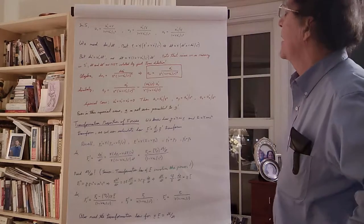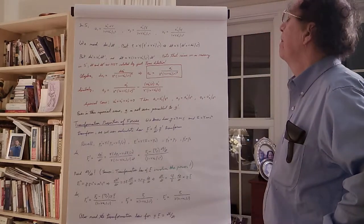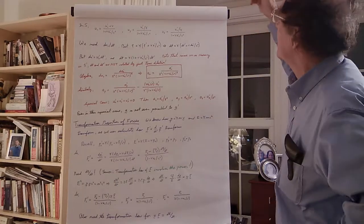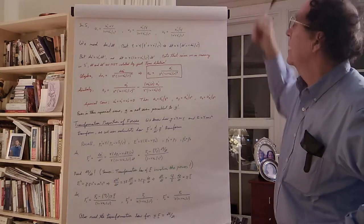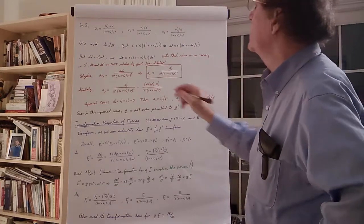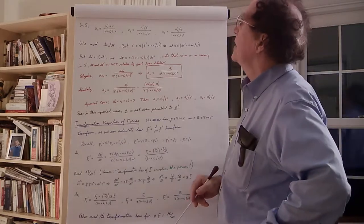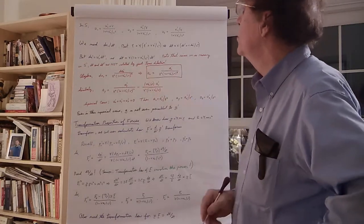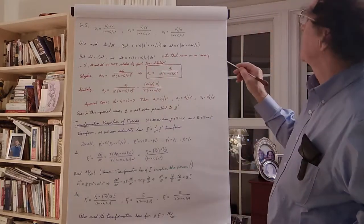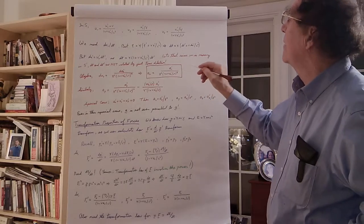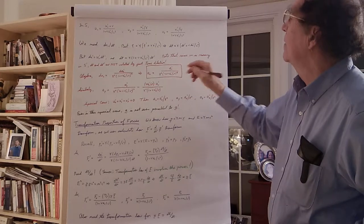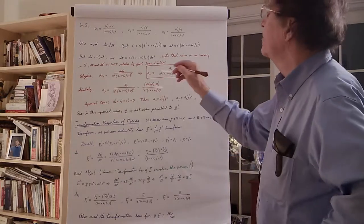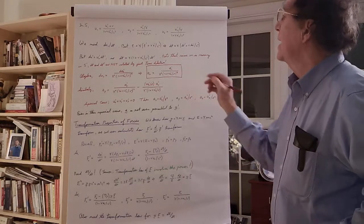From the Lorentz transformation, remembering that DX prime is the distance the particle moves in frame S prime — so DX prime equals U sub X prime times DT prime — I substitute that in and get DT equals gamma times one plus V·U prime sub X over C squared, times DT prime. Be careful here: DT and DT prime are not related by just time dilation, because the particle is moving in frame S prime. If it were at rest in S prime, time dilation would work, but here there's this additional factor proportional to its velocity in frame S prime.